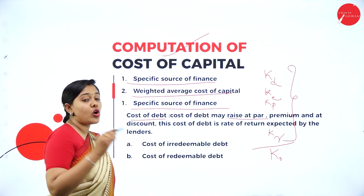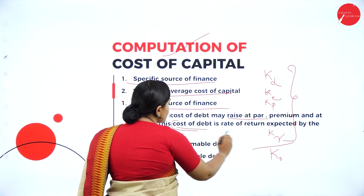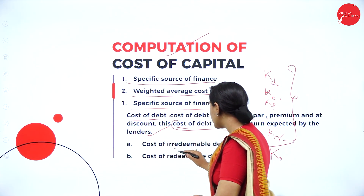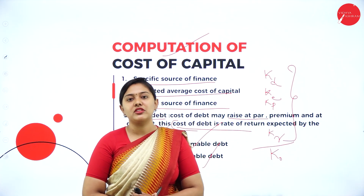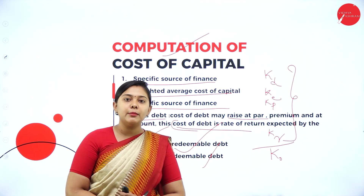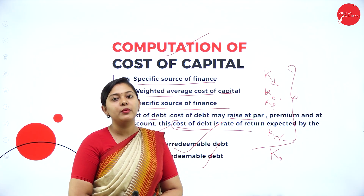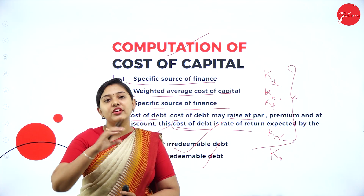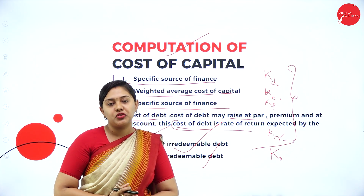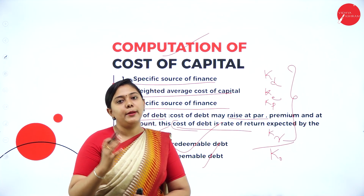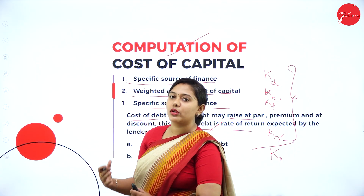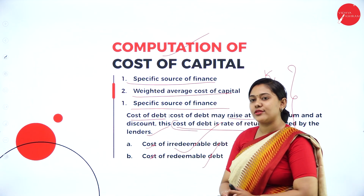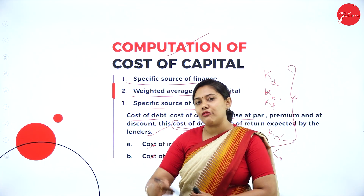Redeemable means that during a stipulated time period — say 5, 10, or 12 years — the amount the investor gave must be returned along with interest. Irredeemable means the company returns the money only once it is closed, after its lifetime. Both calculations must be done using formulas before tax and after tax.